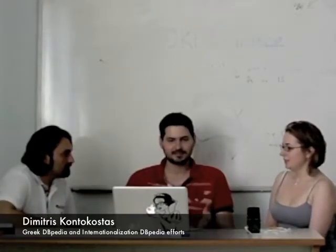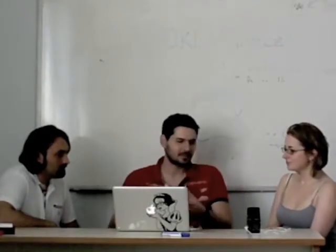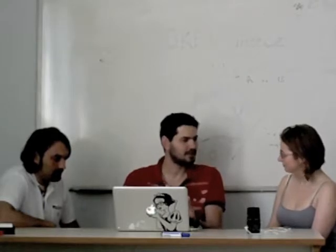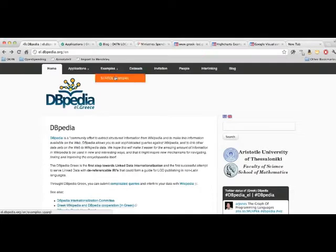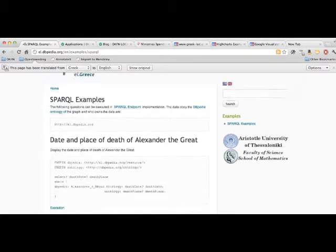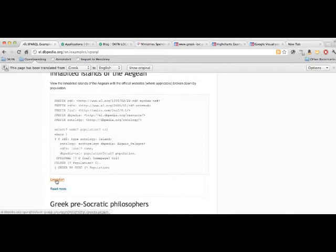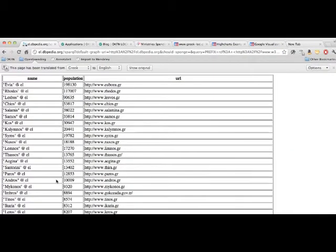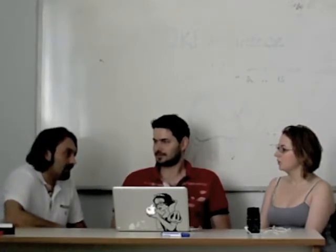DBpedia is a semantic transformation of Wikipedia. There is a program that takes a Wikipedia language edition and extracts semantic data. For example, we have articles in Wikipedia about Greek islands, and we can run a query to find out which ones are populated. Also, the Greek Wikipedia was the first Wikipedia with non-Latin characters.